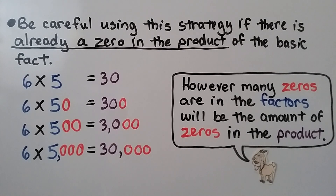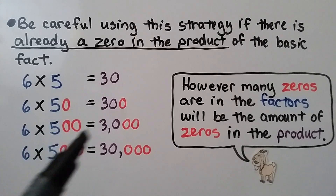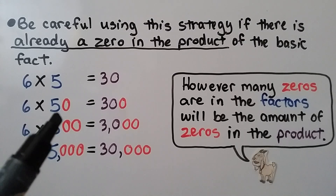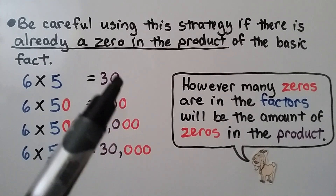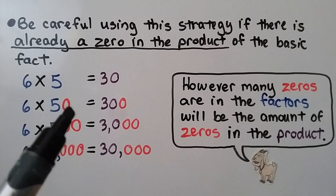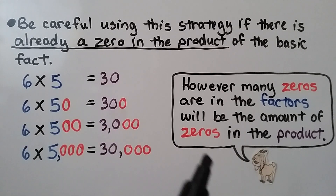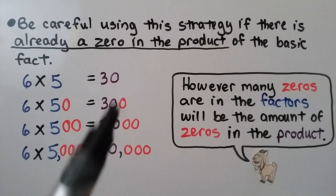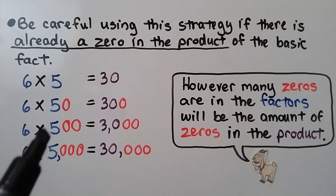We have to be careful using this strategy if there is already a zero in the product of the basic fact. For 6 times 5, which equals 30, we move to 6 times 50. There's only one zero in these factors, so only one zero is added to the 30. So 6 times 50 equals 300. Remember: however many zeros are in the factors will be the number of zeros in the product. If there's already a zero in the product, we ignore it and just leave it there.